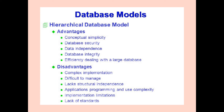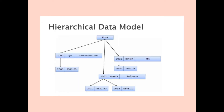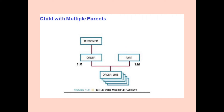The disadvantages of the hierarchical model include: difficult to manage, lacks structural independence, application programming and use complexity, implementation limitations, and lack of standards. This is an example diagram of a hierarchical data model — at the top we can see the root which has several branches. There is another example showing a child with multiple parents.